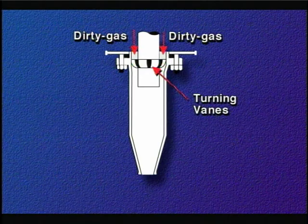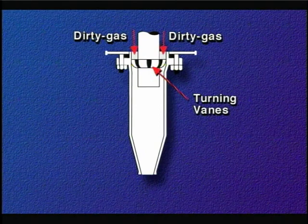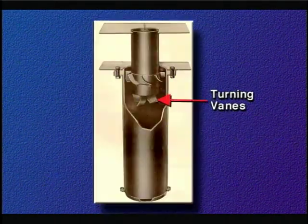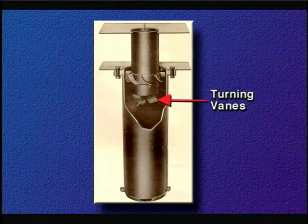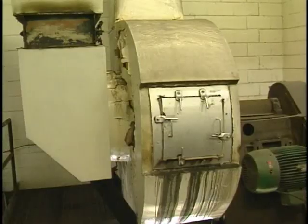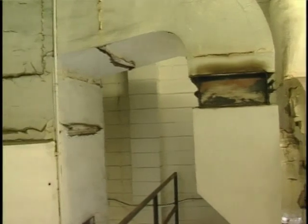Turning vanes are mounted in this annular space in order to impart rotation to the entering gas stream. In some designs, turning vanes are also mounted at the entrance of the exit pipe. As with the larger diameter cyclones, the exit pipes extend into the upper body of the cyclone to prevent direct discharge of the entering gases.